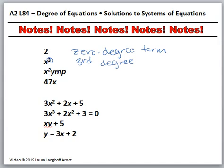Now this one is a little trickier, we've got x^2ymp, but we cannot forget that each one of these, y to the 1, m to the 1, p to the 1, they all count too. So we have 2, 3, 4, 5, this is a 5th degree term.